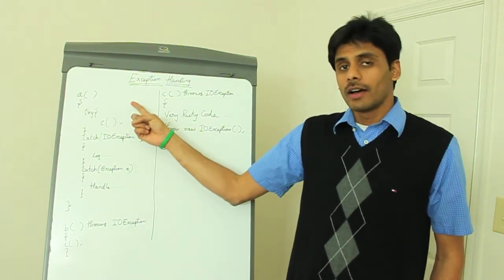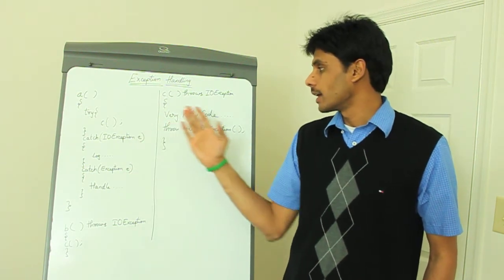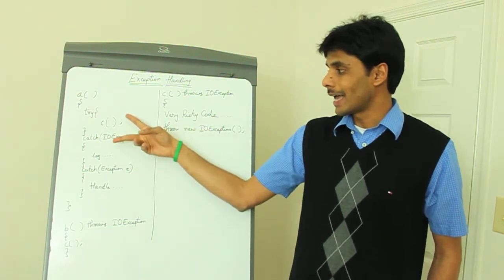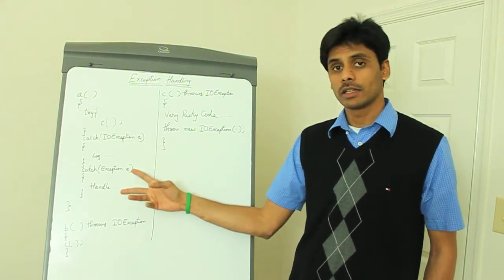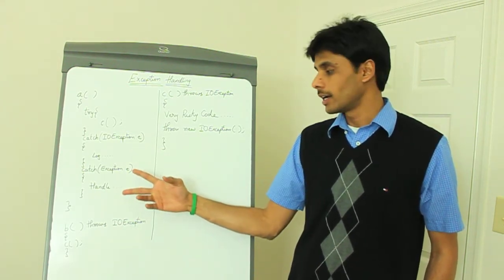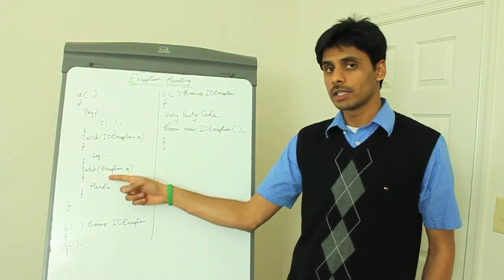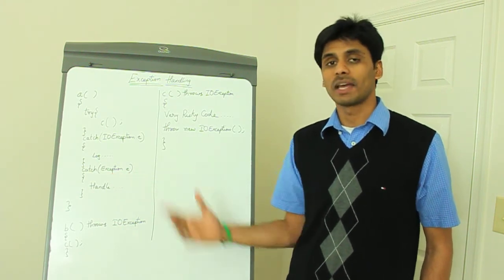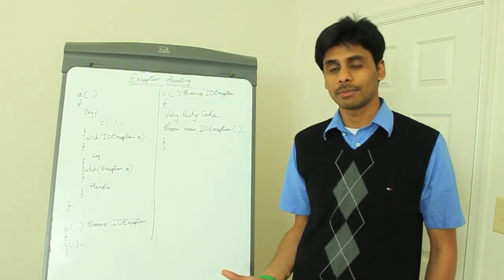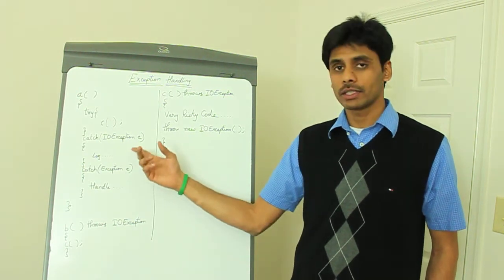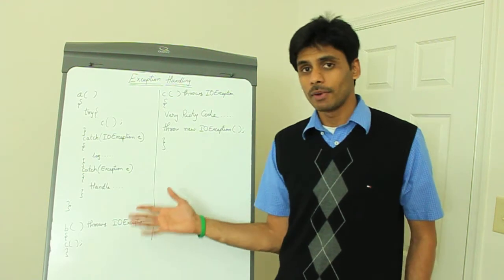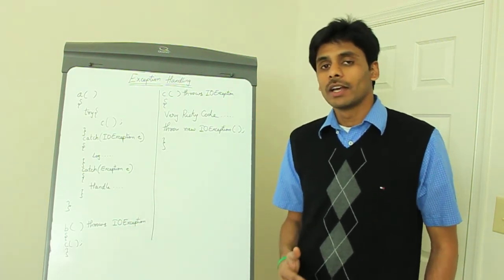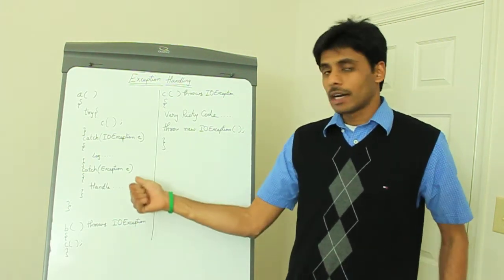And method A, on the other side, handles the IO exception. You see that it has a try-catch block to handle the IO exception and it also handles any other exception type because it uses the class exception. It's the parent class of all the checked exceptions. So method A can handle IO exception and also any other checked exception, checked or runtime, because runtime is also a child of the exception class.